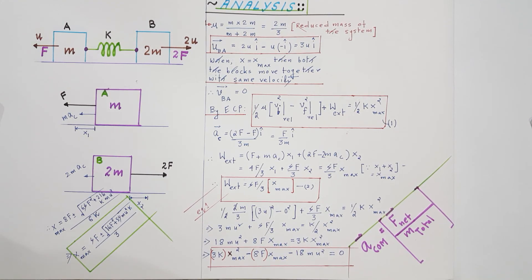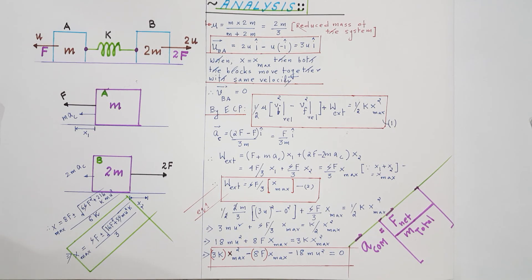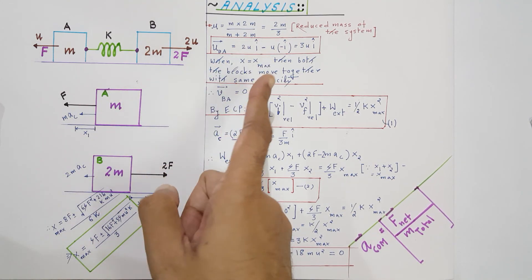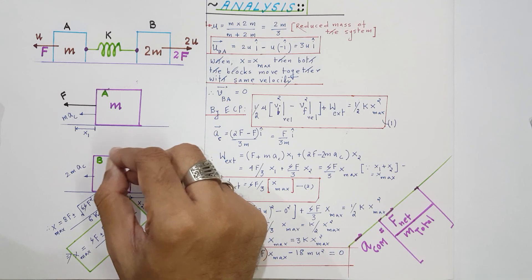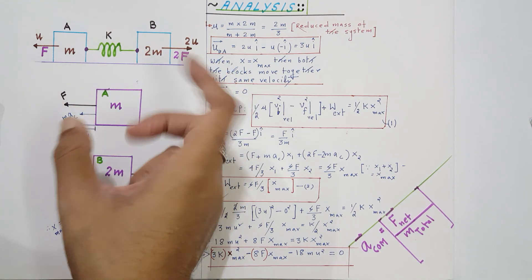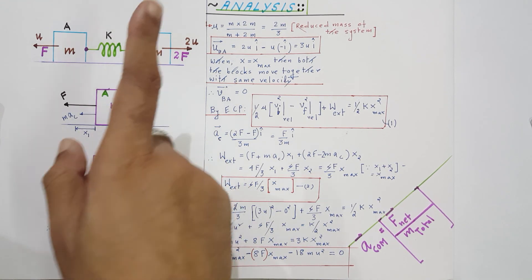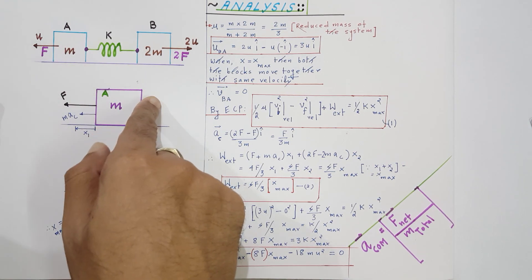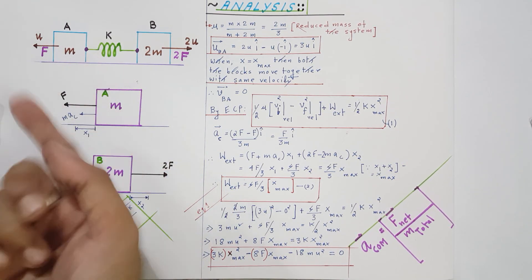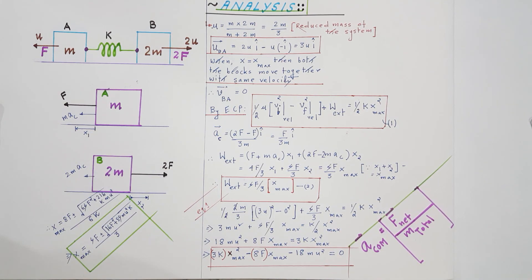I hope you found this problem useful. It helped clarify fundamental concepts of center of mass, spring force, and the work-energy theorem. Remember: when the spring has its maximum extension, both blocks have the same velocity at that instant — if they had different velocities, that would not be the point of maximum extension. See you again with another interesting problem in the next video. Till then, take care and love physics!